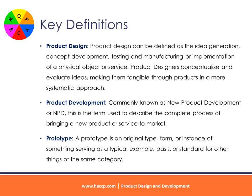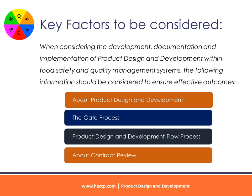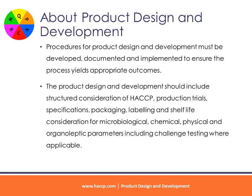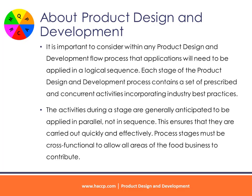When considering the development, documentation and implementation of product design and development within food safety and quality management systems, the following information should be considered to ensure effective outcomes. Procedures for product design and development must be developed, documented and implemented to ensure the process yields appropriate outcomes. The product design and development should include structured consideration of HACCP, production trials, specifications, packaging, labeling and shelf life consideration for microbiological, chemical, physical and organoleptic parameters, including challenge testing where applicable. It is important to consider that applications will need to be applied in a logical sequence within any product design and development flow process.